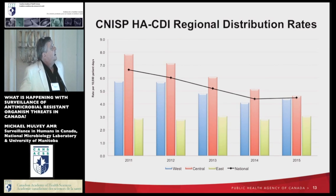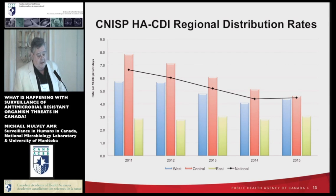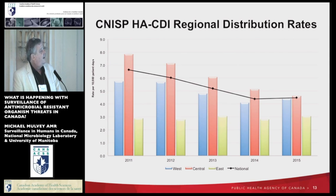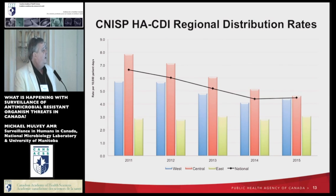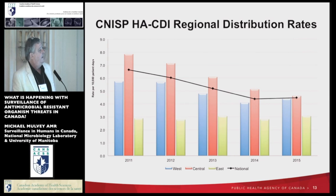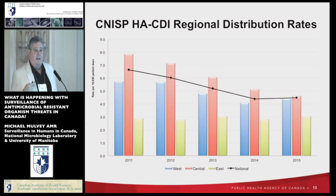Looking at C. difficile infections from the CNISP program — the overall rate line has regional differences. Blue represents the western provinces, Manitoba westward; central is Ontario and Quebec; and green is the maritime provinces. C. diff rates have remained fairly constant in the maritime provinces, and it's the west and central areas that are really driving down the rates overall at a national level.